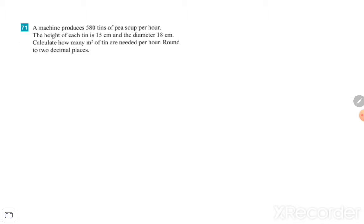They just tell us that the machine produces 580 tins of pea soup per hour. The height of each tin is 15 centimeters and the diameter is 18 centimeters. Calculate how many square meters of tin are needed per hour and round to two decimal places.